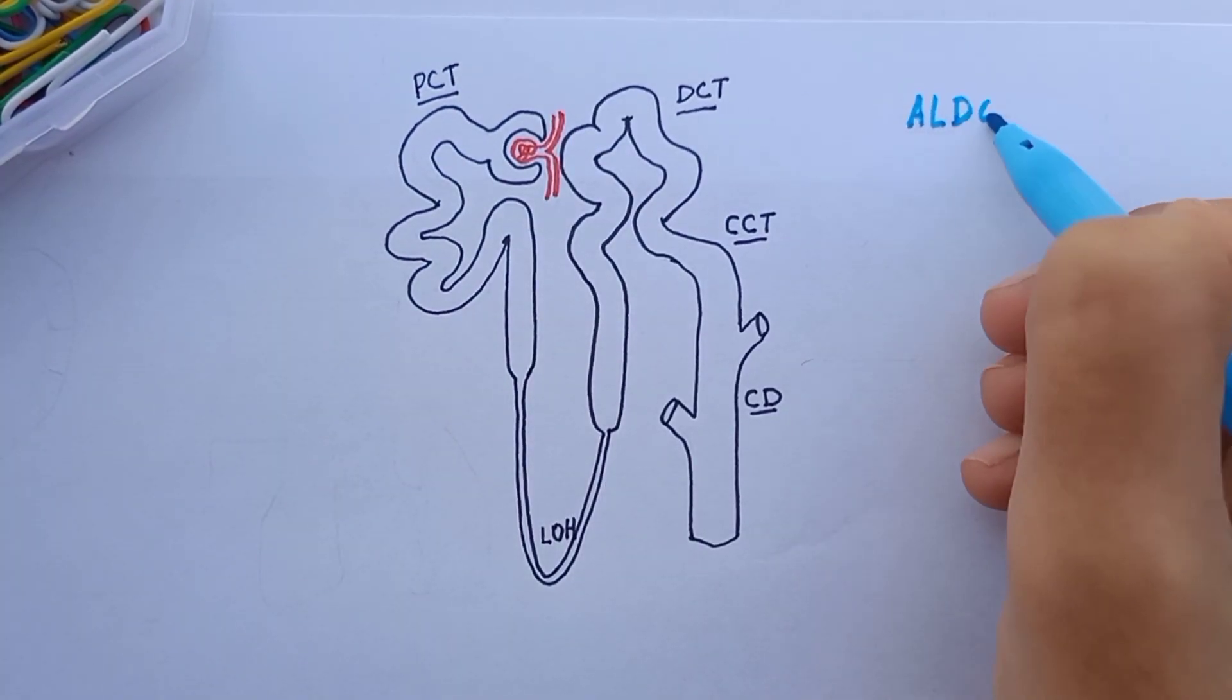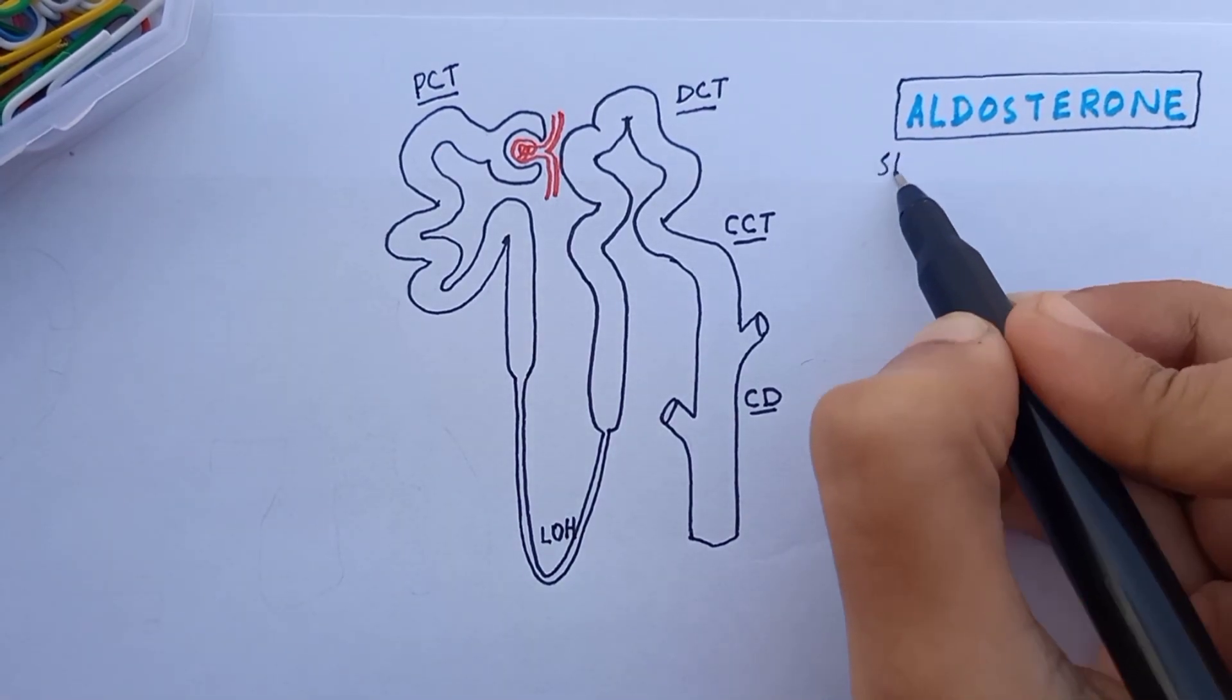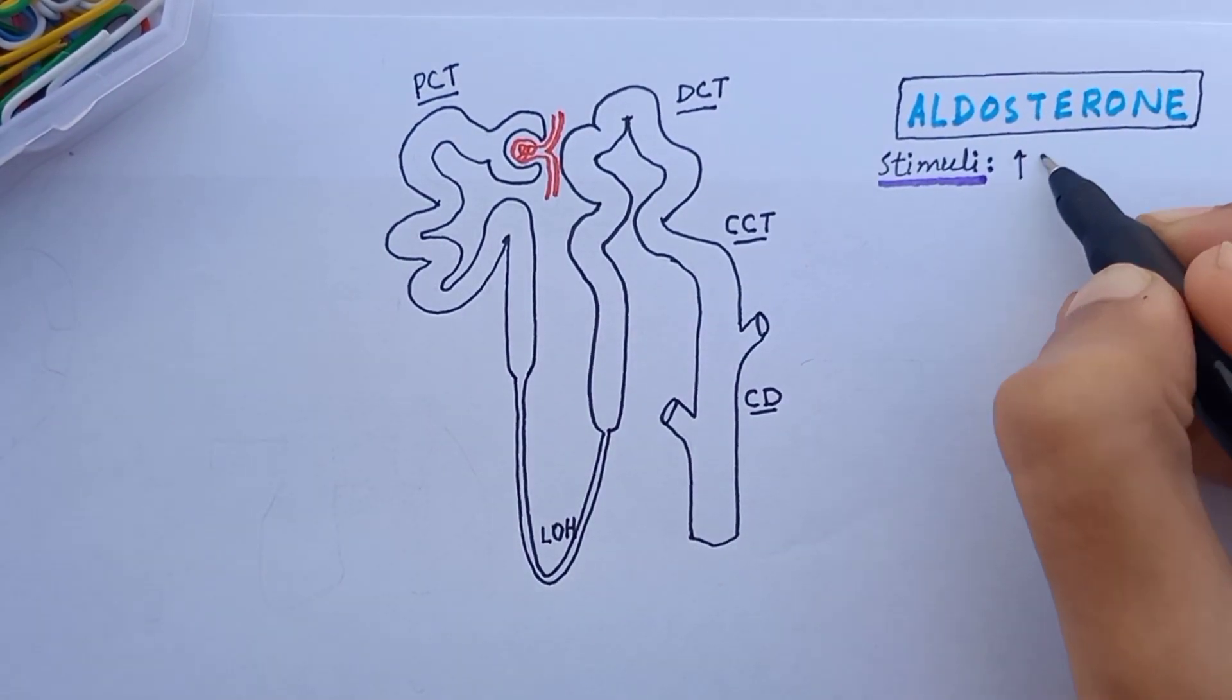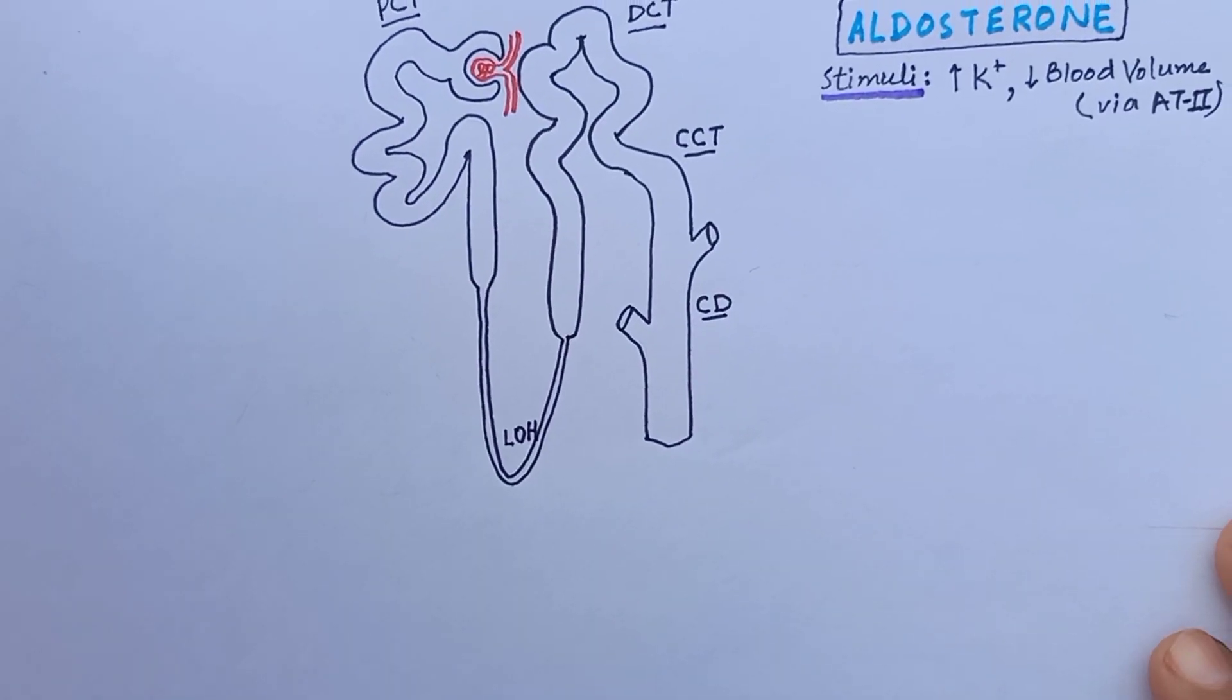To begin with, there is this hormone aldosterone. The most important stimuli for aldosterone secretion are increased extracellular potassium concentration and decreased plasma volume via angiotensin 2. We will discuss it in a minute.